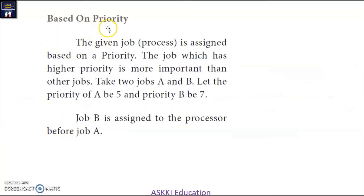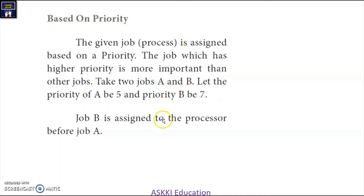The fourth algorithm is Priority-based scheduling. Each job is assigned a priority number. The job with the higher priority is more important and is executed first. For example, if job A has priority 5 and job B has priority 7, then job B has the highest priority, so B is assigned to the processor and executed first, followed by job A. These are the four process management algorithms given in your textbook.